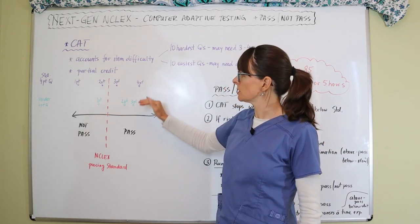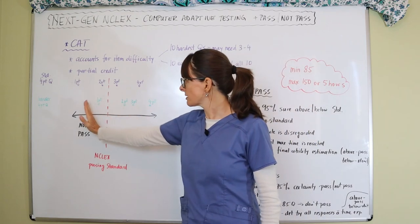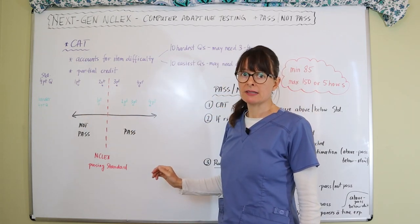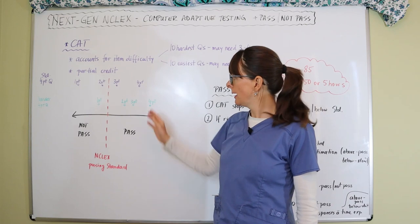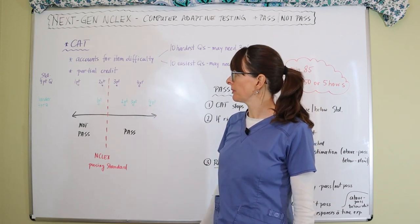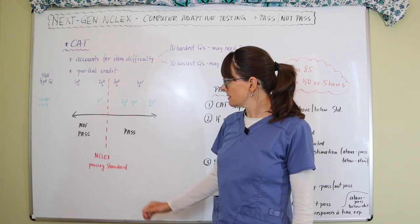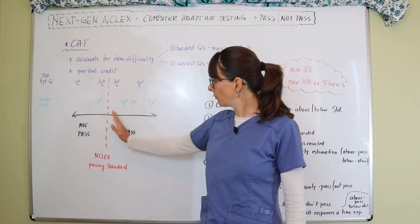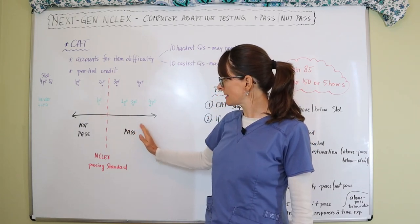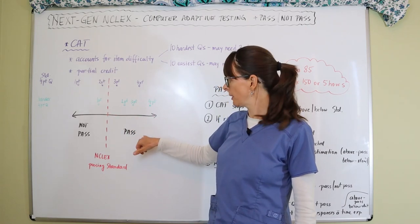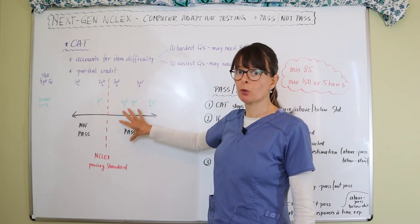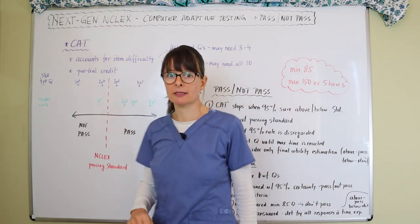So the item difficulty determines what side of pass and non-pass you'll be on, giving you points based on the question difficulty. When you're on the passing side enough times—we'll go over this in a moment—then it's determined that you actually pass the NCLEX exam.